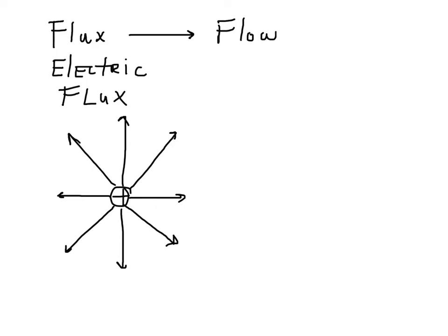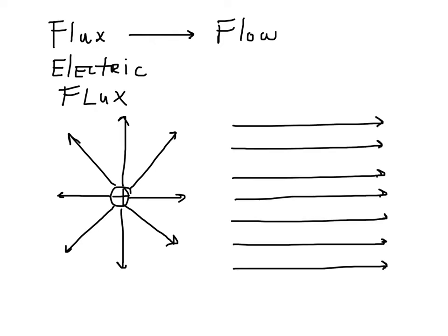It's good to understand flux in general as a flow, but for electric field we have to keep in mind that the field lines are static. Here we have a uniform flux. A good example is sunlight: it comes from far away and arrives as parallel lines.